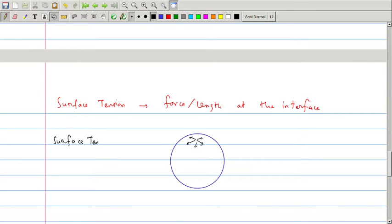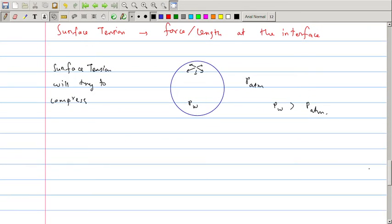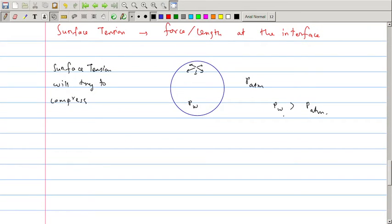That is why, suppose the outside pressure is the atmospheric pressure and this is pressure inside this water droplet. To balance this inward force of the surface tension, the pressure of water has to be greater than the atmospheric pressure. Let us now determine how much greater it will be.